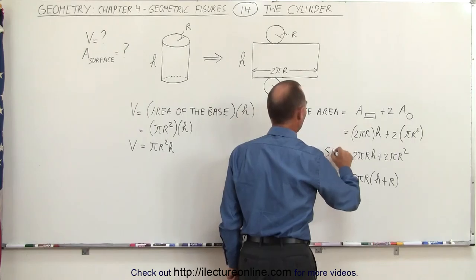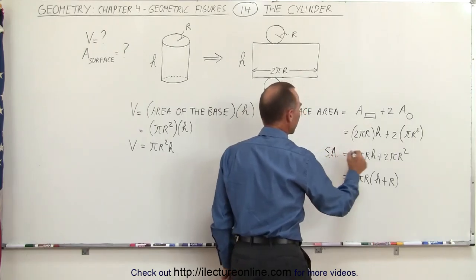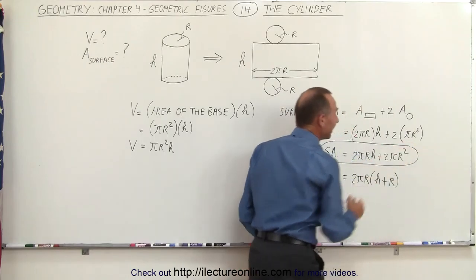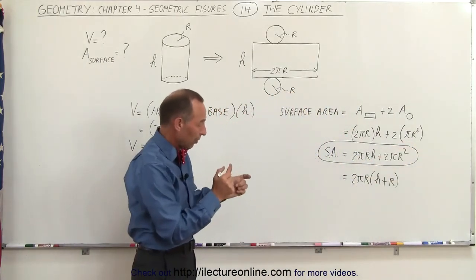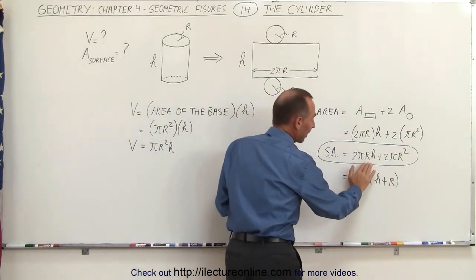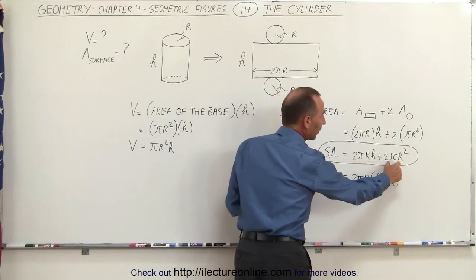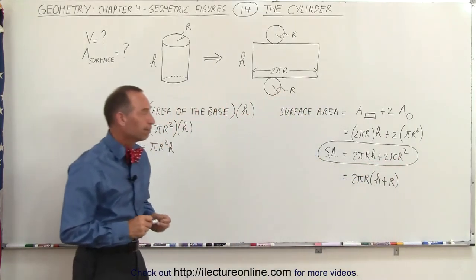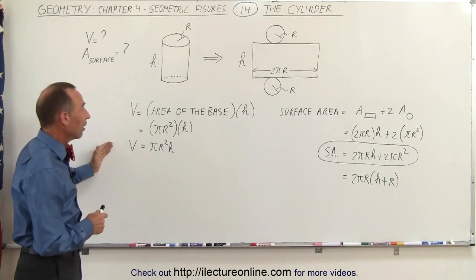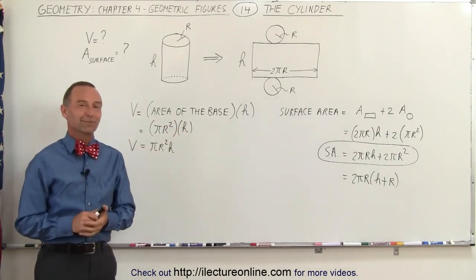So the surface area, I'll just write SA for surface area, is equal to this. If you write it in this form then you can see it as two separate things. The area of the side plus the area of the top and the area of the bottom combined. And that's how we find the volume and the surface area of the cylinder.